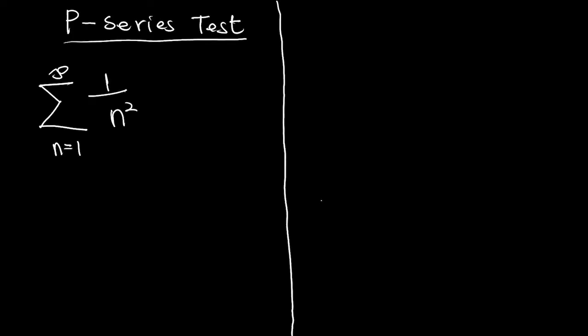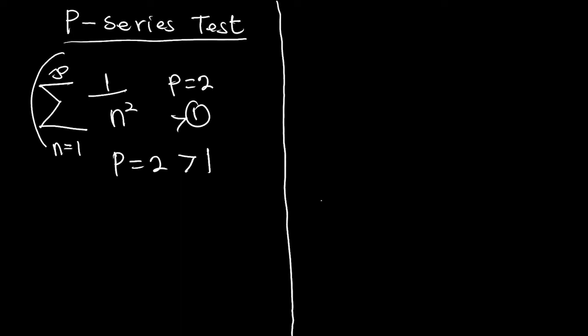Let's consider another example. From inspection, p is equal to 2. Since p equals 2, which is greater than 1, the series converges by the P-series test.